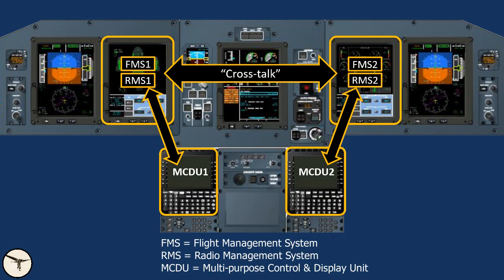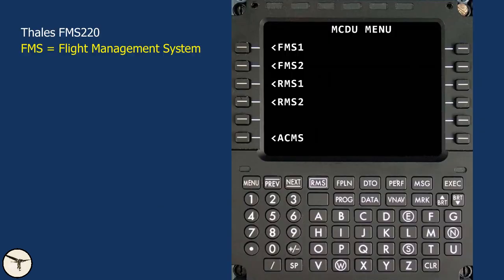The FMS and the RMS are controlled with the MCDU, the multi-purpose control and display unit. The aircraft has two MCDUs. The left MCDU is normally connected to FMS number 1 and RMS number 1, and MCDU number 2 is connected to FMS number 2 and RMS number 2. The systems are interconnected and changes due to one FMS or RMS are automatically transferred to the other. This is called crosstalk and ensures redundancy. The flight management system is a THALES FMS 220.